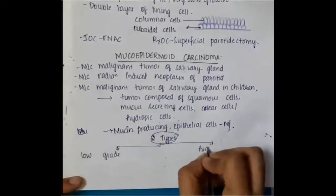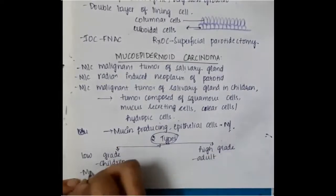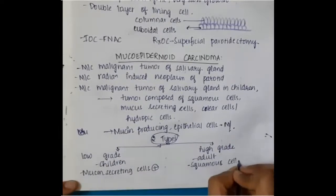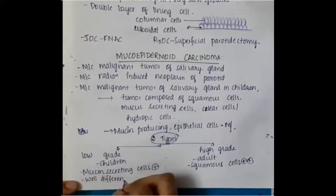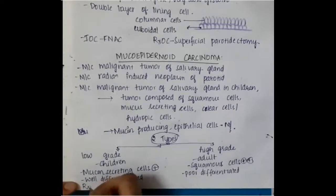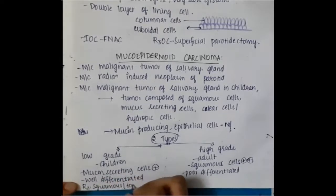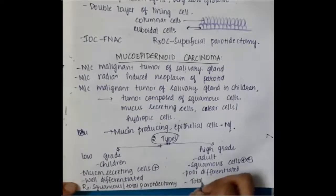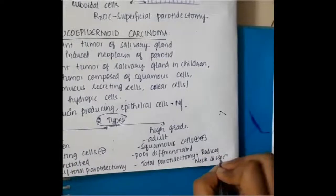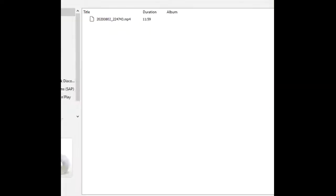There are two types of mucoepidermoid carcinoma: low grade and high grade. Low grade is seen in children and high grade in adults. Low grade has predominantly mucin-secreting cells and is well differentiated; treatment is superficial or total parotidectomy. High grade has predominantly squamous cells and is poorly differentiated; treatment is total parotidectomy with radical neck dissection.